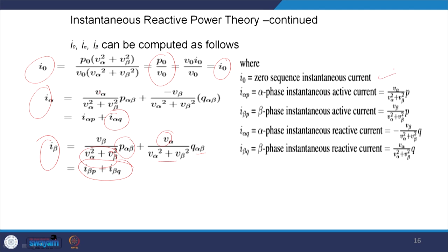So we can write in a synchronized way: the zero-sequence instantaneous current is I0; Iαp is the in-phase component of the active current, that is Ip·cos(ωt) — sometimes referred to as Ip·cos(ωt) — given by the expression Vα / (Vα² + Vβ²) multiplied by the actual power consumed. Iβp will be the in-phase component of the current: Vβ over the same denominator. These are the cross components — that is the reactive power component.